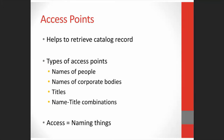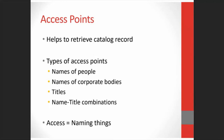Access points include names of people such as authors, illustrators, and editors; names of corporate bodies such as state and federal government agencies, schools, and churches; titles such as the title of the work or series; and sometimes a combination of name and title, such as a series by a specific author. So I define access as naming things — that's really all you're doing. And this leads us to a concept related to access, which is called authority control.